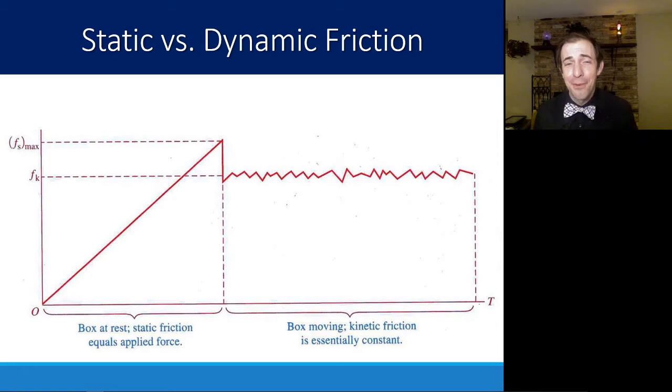We can see that same graph here and you can see why it was happening. It's nice to see that simulation first. As you're pulling the box at rest, the static friction will apply whatever force you're pulling with until finally you overcome it and get it moving.